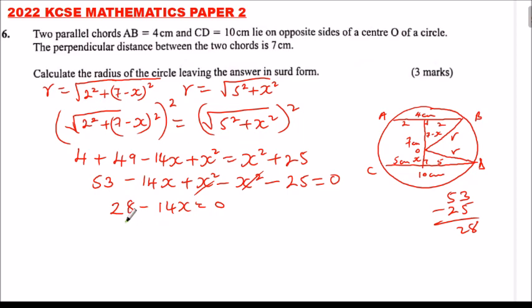We take 14 to the other side, so 14x equals 28. Divide both sides by 14, and x equals 2.